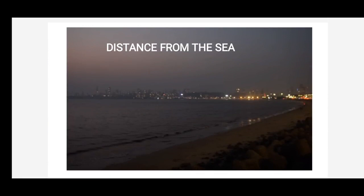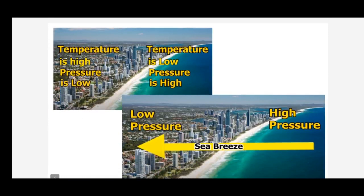The next factor in the six climatic controls is distance from the sea. The sea exerts a moderating influence on the climate. During the day, the land gets heated more than the sea, so on the land the temperature is high and the pressure is low. On the water bodies, that is the sea, the temperature is relatively low and pressure is high. So the wind starts blowing from the sea to land during the day, and this is known as sea breeze. During the daytime, the coastal areas will receive sea breeze.